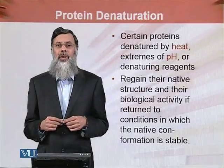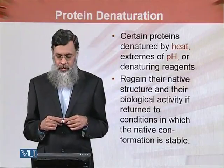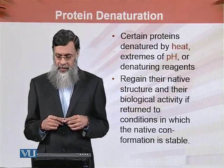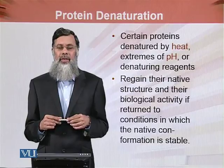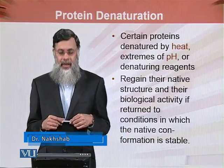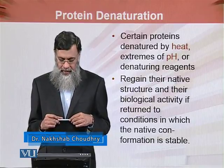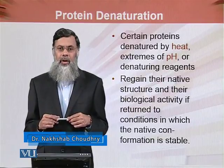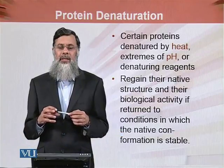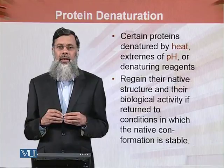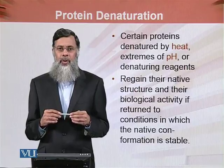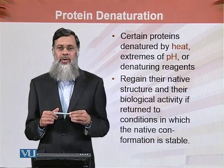We are continuing protein denaturation in this module. Certain proteins are denatured by heat, extremes of pH, or denaturing agents as discussed in the last module — very high or low pH, very high temperatures, heavy metals like iron, and small polar solvents like ethanol and urea. These will disrupt the secondary, tertiary, or even the quaternary structure of proteins, but the primary structure is retained.